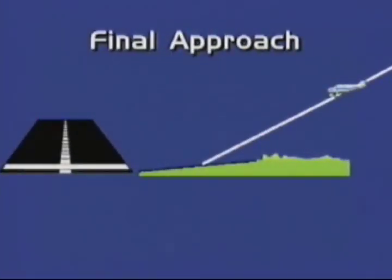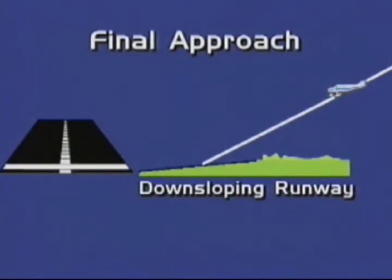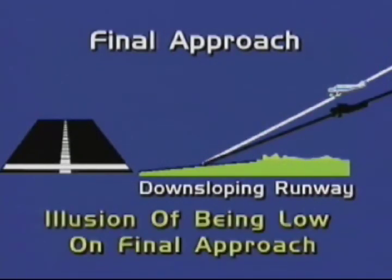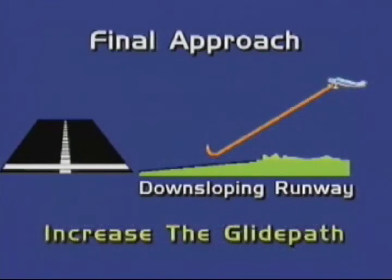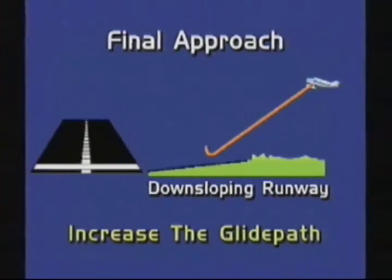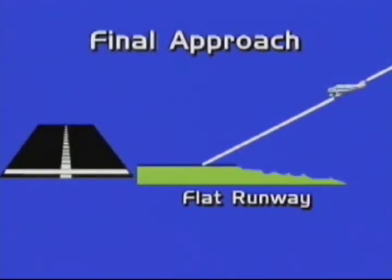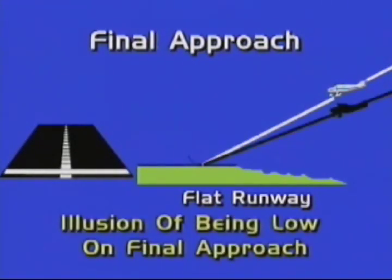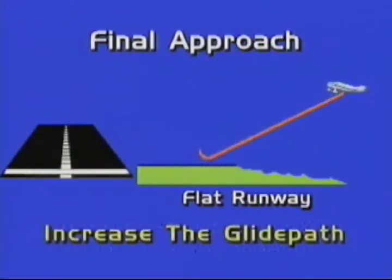A final approach over flat terrain with a downsloping runway may produce the visual illusion of being low on final approach. If you believe this illusion, you may respond by pulling the nose up to increase the glide path. With an upsloping terrain and a flat runway, you may have an illusion of being low on final approach. If you believe the illusion, you may respond by pulling the nose up to increase the glide path, which may result in a low-altitude stall or a missed approach.